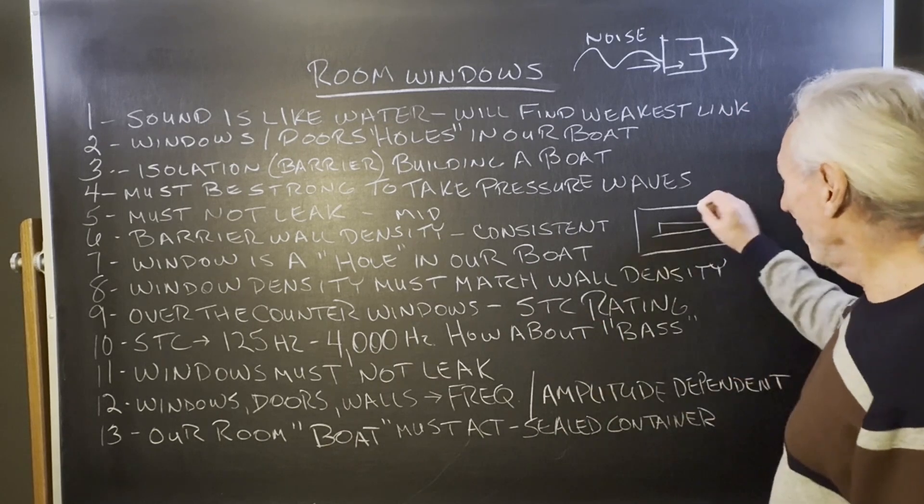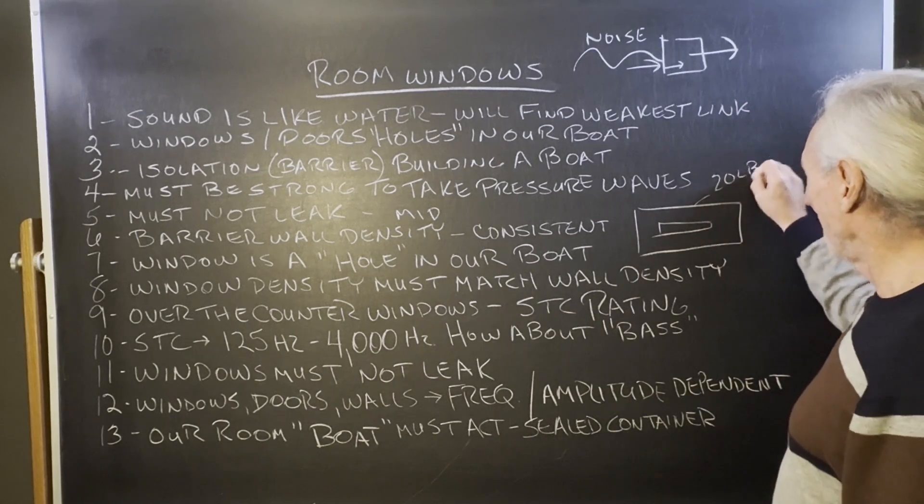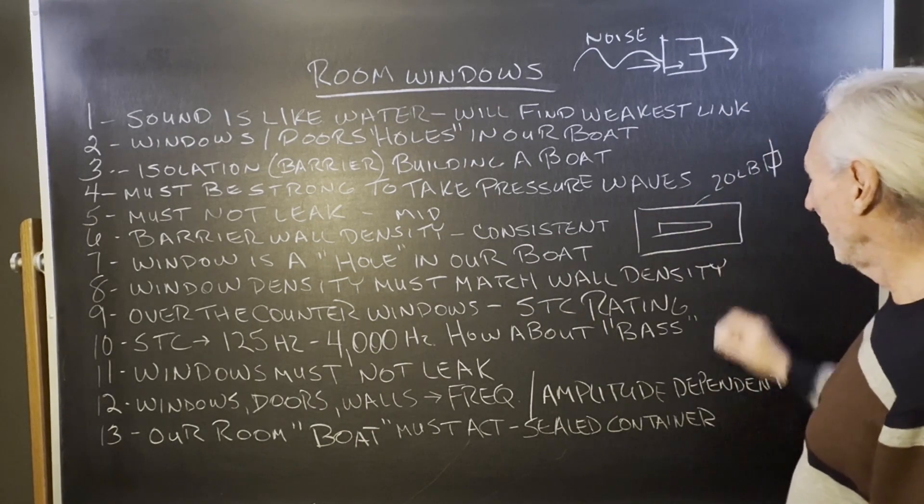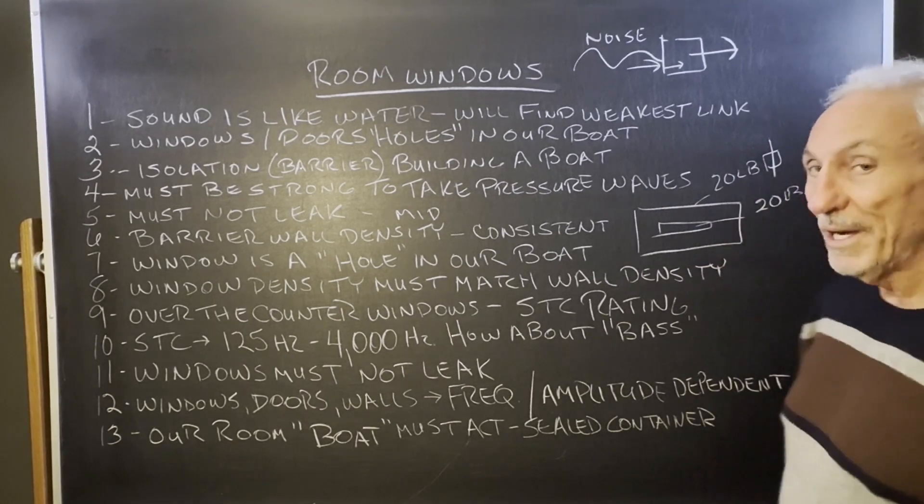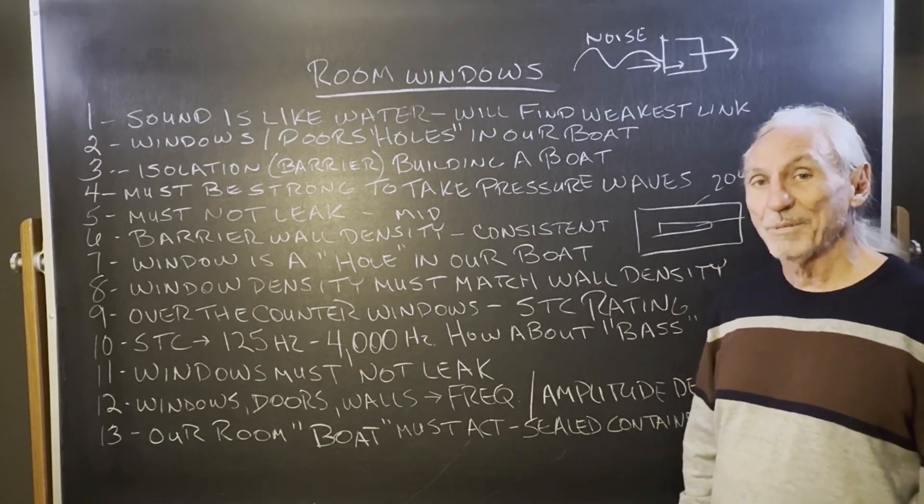So the big key here with the window is that the window density must match that of the wall density. So if we have a wall density that's 20 pounds per square foot, then our window should be 20 pounds per square foot.